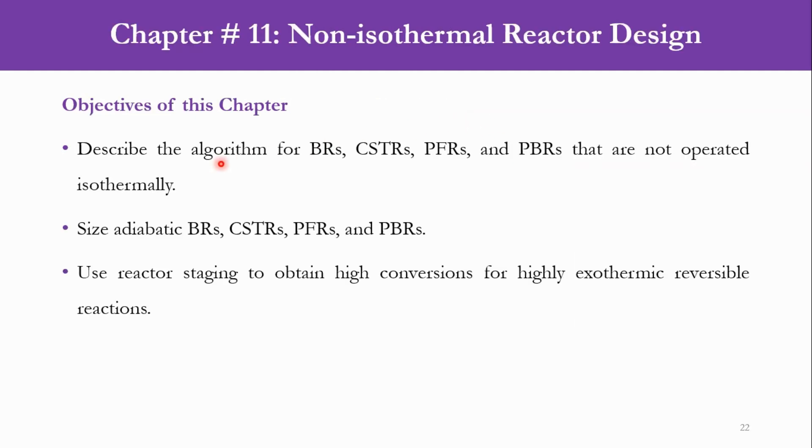Objectives of this chapter include: describe the algorithm for batch reactors, CSTRs, PFRs, and PBRs that are not operated isothermally; second, size adiabatic reactors including batch, CSTR, PFR, and PBR; and third, use reactor staging to obtain high conversions for highly exothermic reversible reactions.